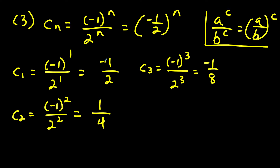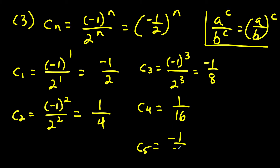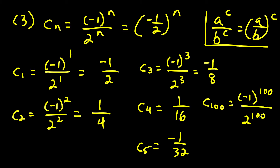Negative one half to the first is negative one half, to the second power is positive one fourth, to the third is negative one eighth. For the fourth power it switches back to positive: one over 16. For the fifth, multiplying by negative one half again gives negative one over 32. For the 100th term, we have negative one to the 100 over two to the 100th. Since the power is even, negative one to the 100 equals positive one, so c sub 100 equals one over two to the 100th power.